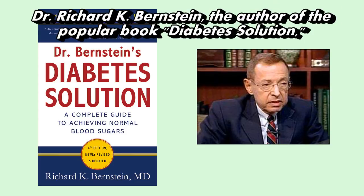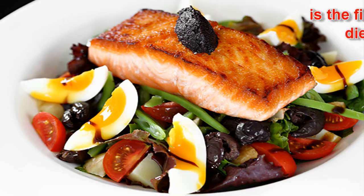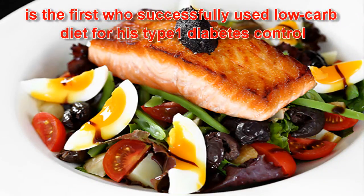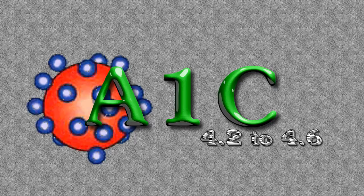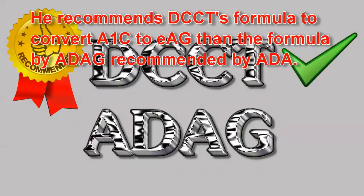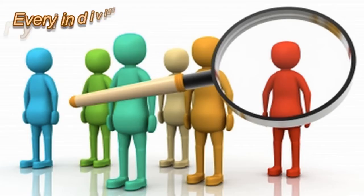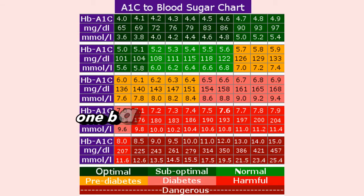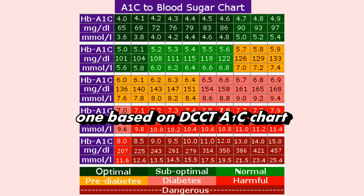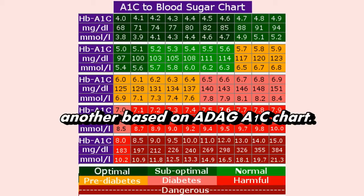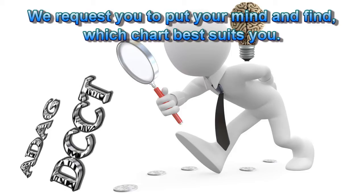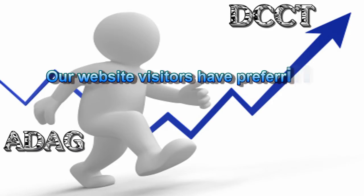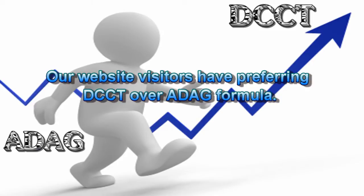Dr. Richard K. Bernstein, author of the popular book Diabetes Solution, was the first to successfully use a low-carb diet for his type 1 diabetes control with an A1c of 4.2 to 4.6. He recommends DCCT's formula to convert A1c to EAG over the ADAG formula recommended by the ADA. We provide two A1c-to-EAG charts: one based on the DCCT formula and another based on the ADAG formula. We encourage you to find which chart best suits you, and our website visitors have been preferring DCCT over the ADAG formula.